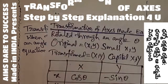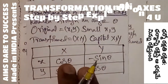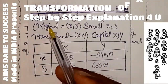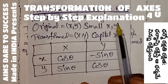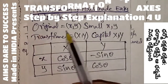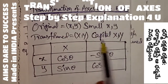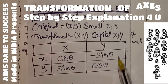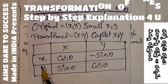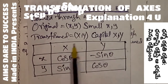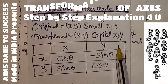Before going to the solution, I wanted to discuss a simple shortcut. Transformation of axis rotated through an angle theta is given. Original means small x, small y. Transformed means capital X, capital Y. If you know this box you will get a formula — you will get a transformed equation or the original equation.